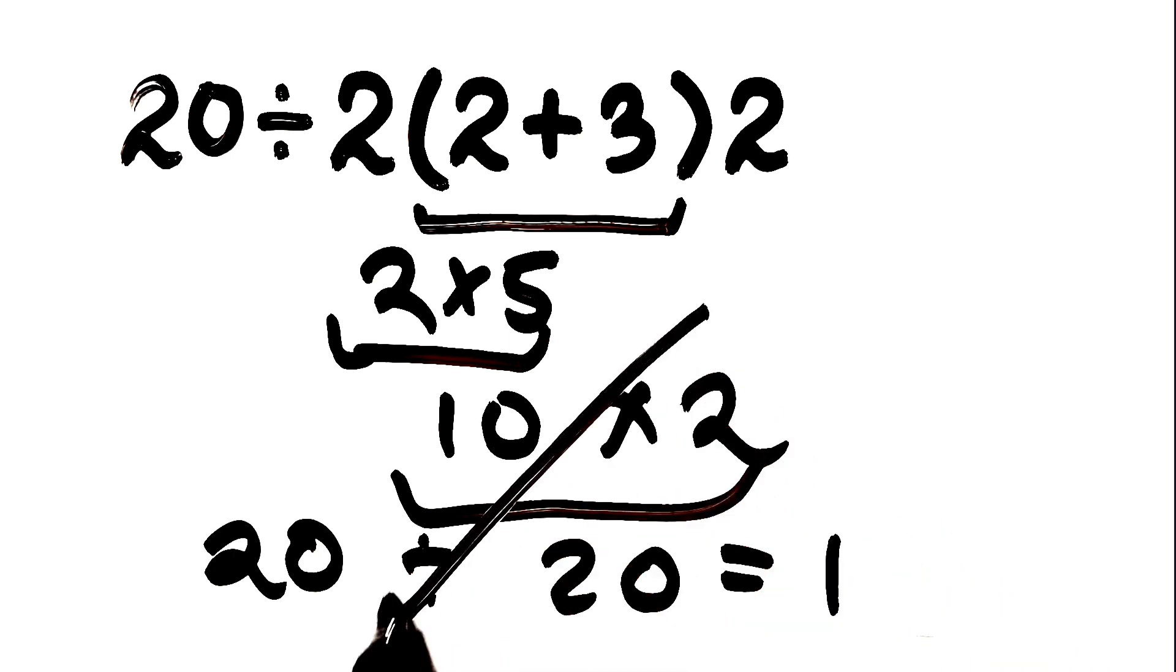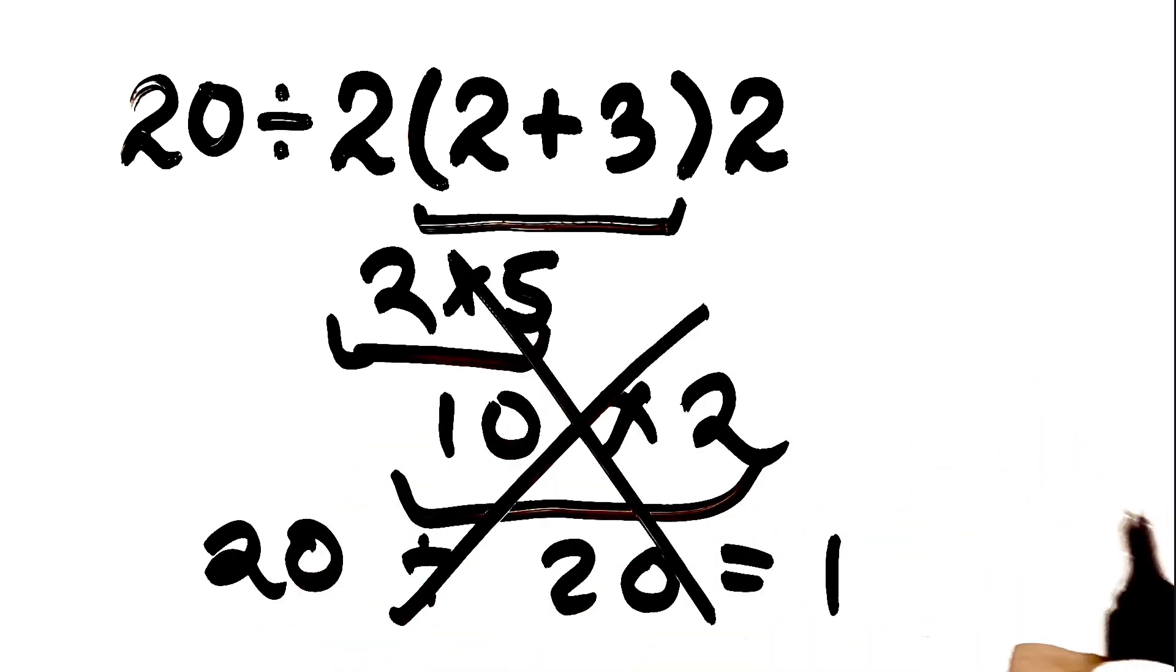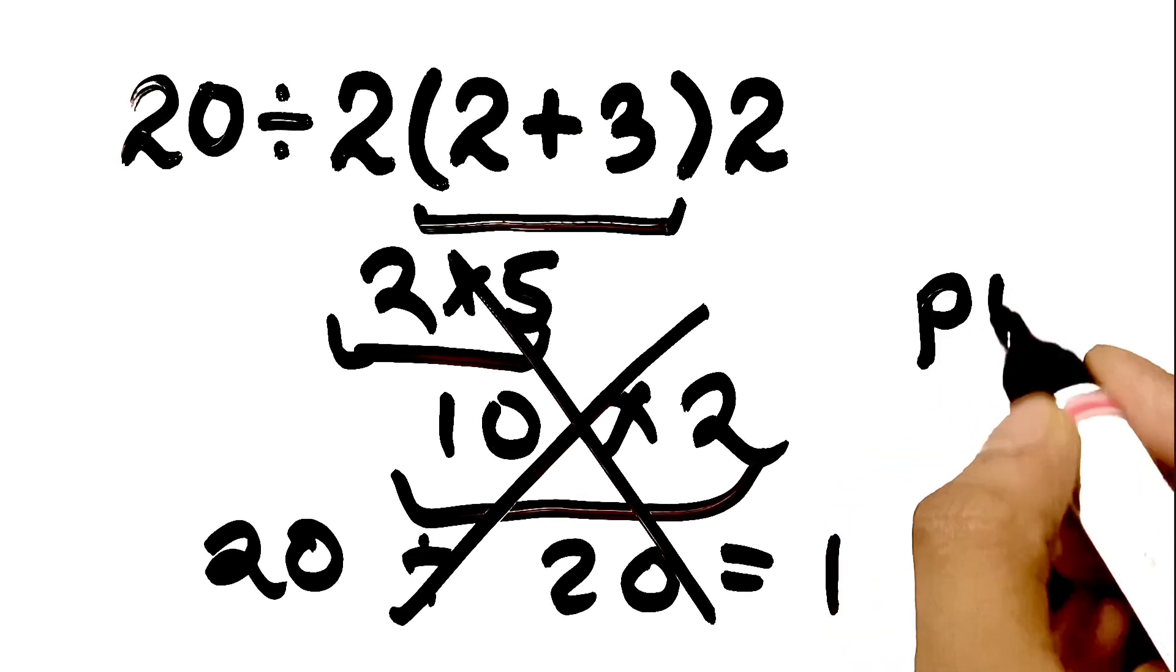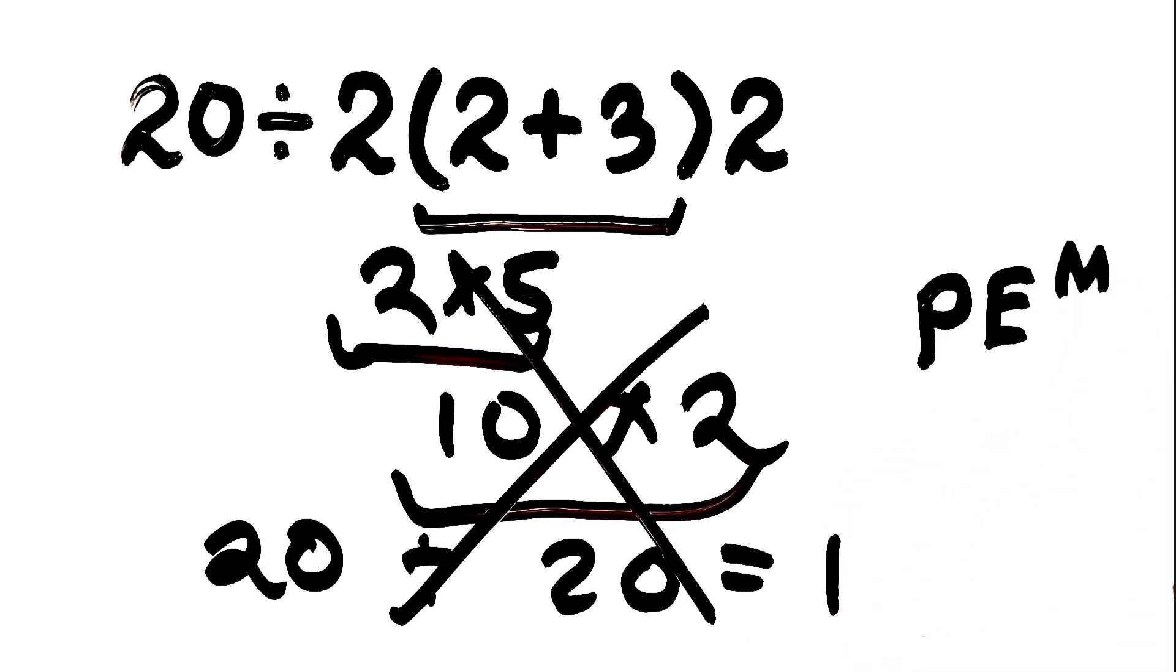But this answer is not correct. Because according to the order of operations, first we have to do parenthesis, then exponents, then multiplication or division, and finally, addition or subtraction.